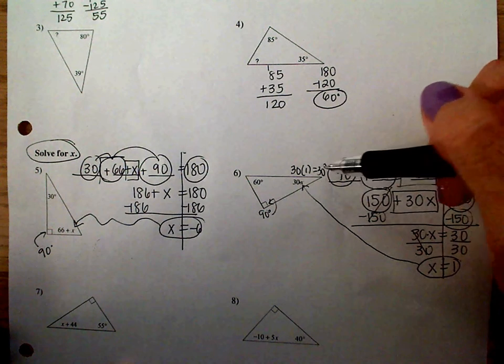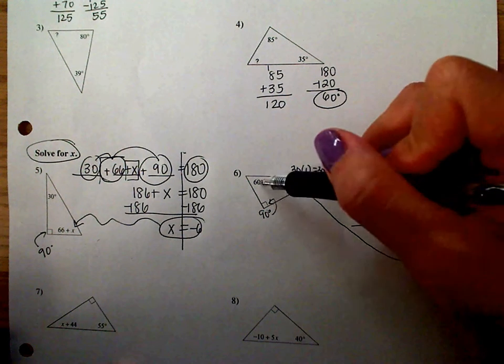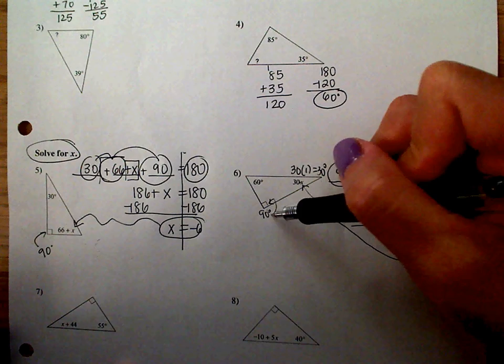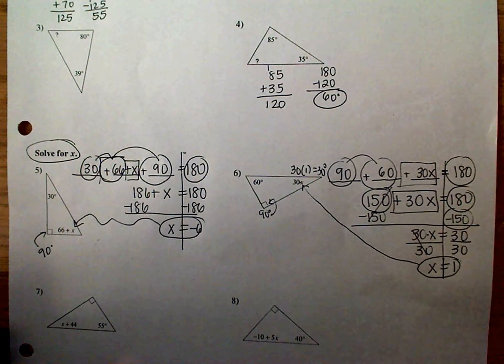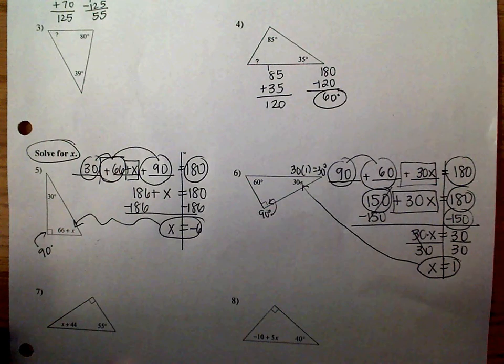Now, if you want to check, 30 plus 60 plus 90 should be 180. If it's not, something went wrong here. But, it actually does add up to be 180, so we can check that way and see that we're correct.